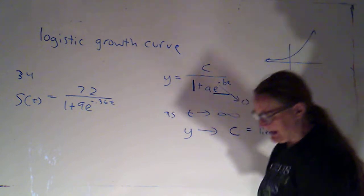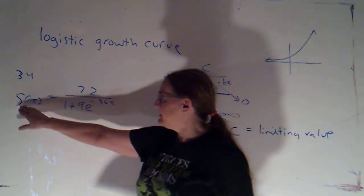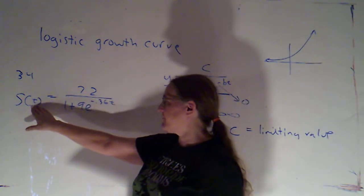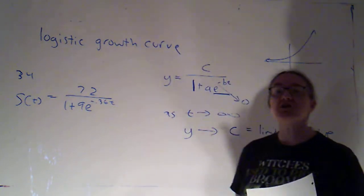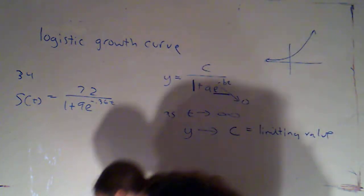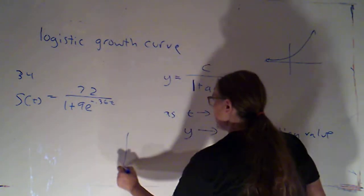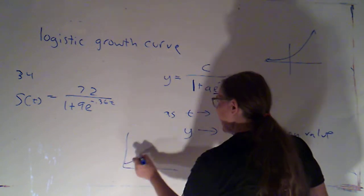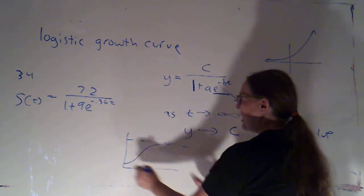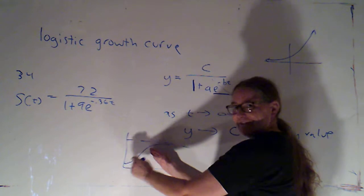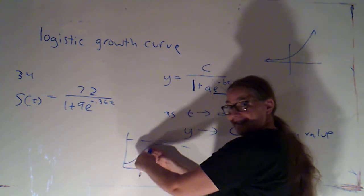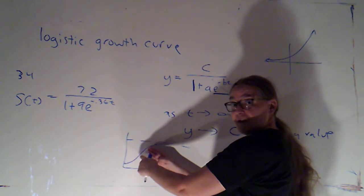And what this is representing is the sales. S is standing for sales as a function of time after you initially launch a product. Now, it makes some sense that we might see a curve that had that same basic shape. Initially, this is really popular and new, so the growth in sales is big, looking like exponential growth.